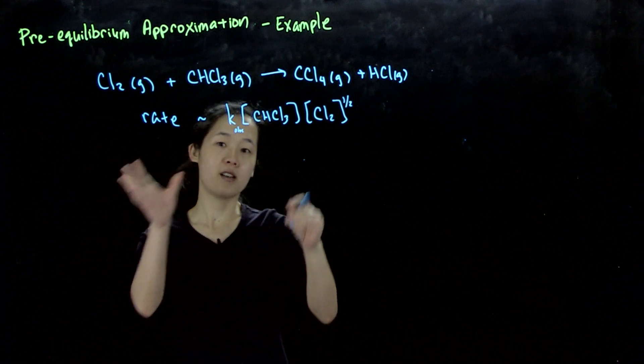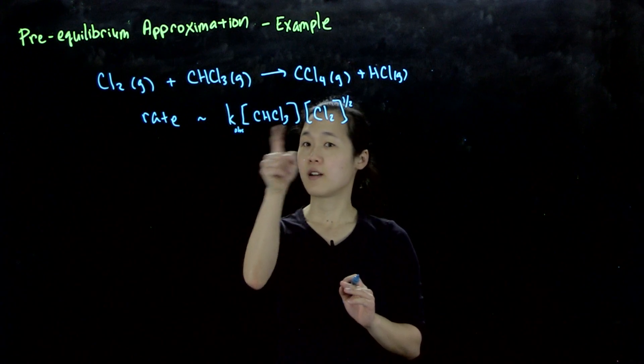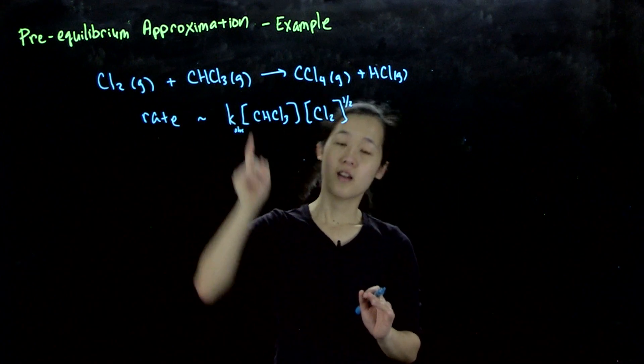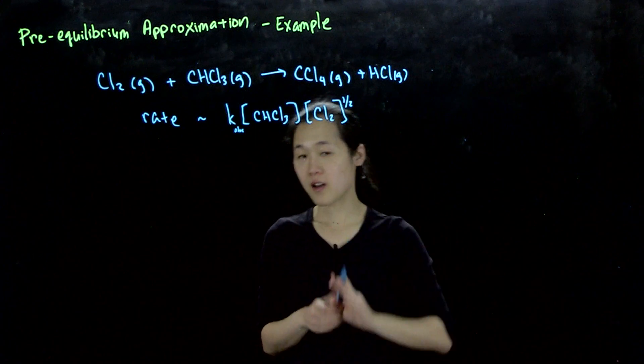This is an acceptable rate law because we have our rate law in terms of reactants and not intermediates, but this tells us that something more complicated is going on.